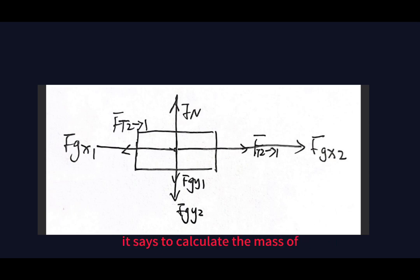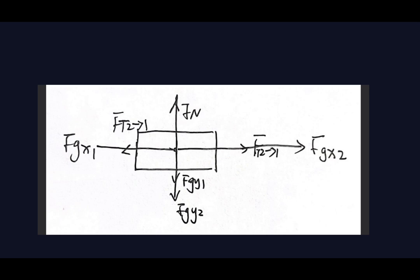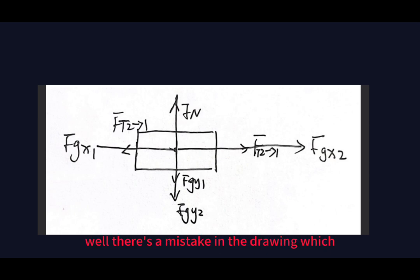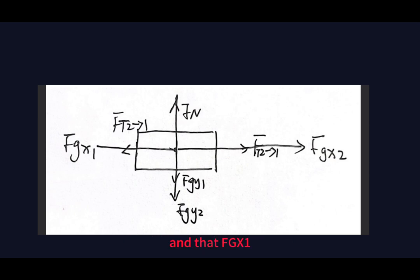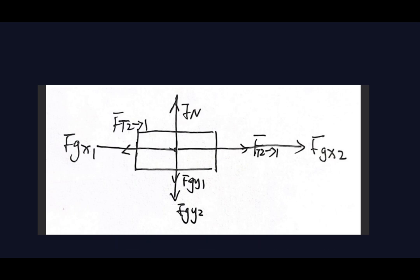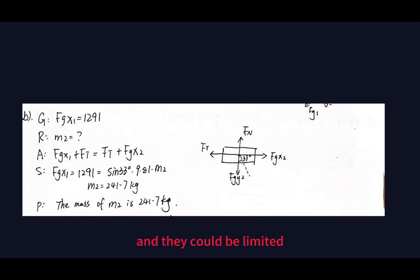Question B asks to calculate the mass of m2 needed to keep the system in equilibrium. I drew a diagram of the whole system, not just each crate individually. There is a mistake in the drawing — the tension on the right should be the force from m1 to m2, not m2 to m1. The net force equals zero since the system is in equilibrium, and fgx1 should equal fgx2 because the two tensions are equal in magnitude but opposite in direction and cancel out.